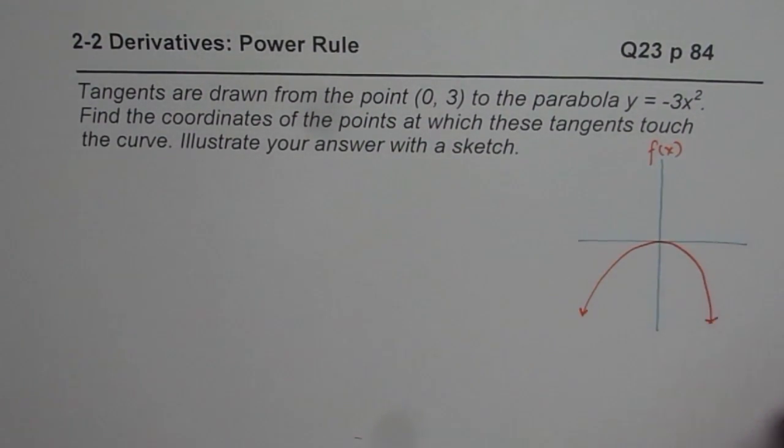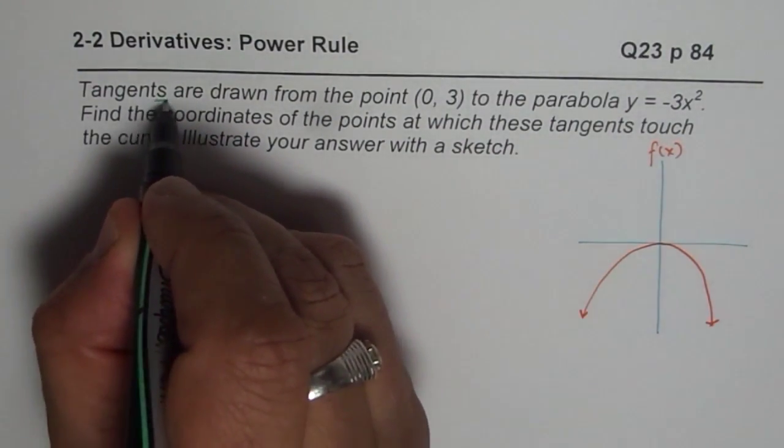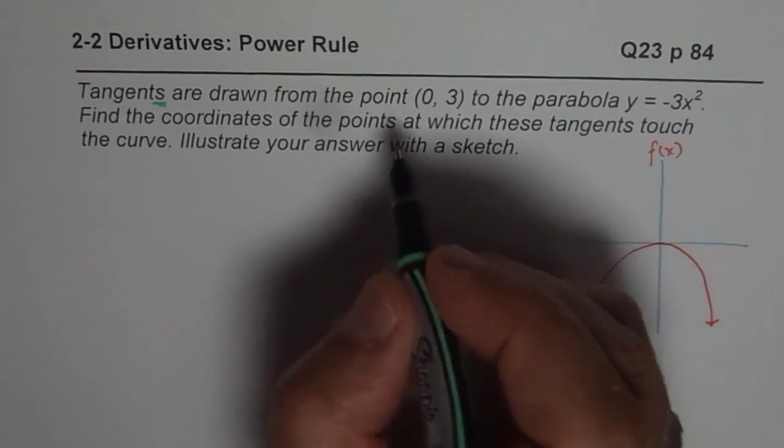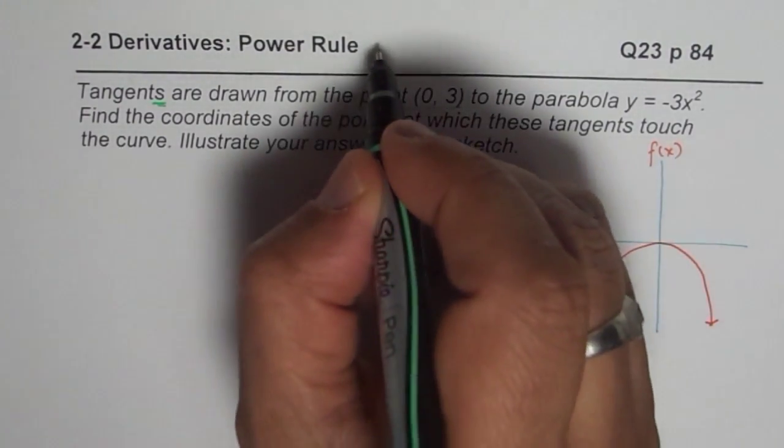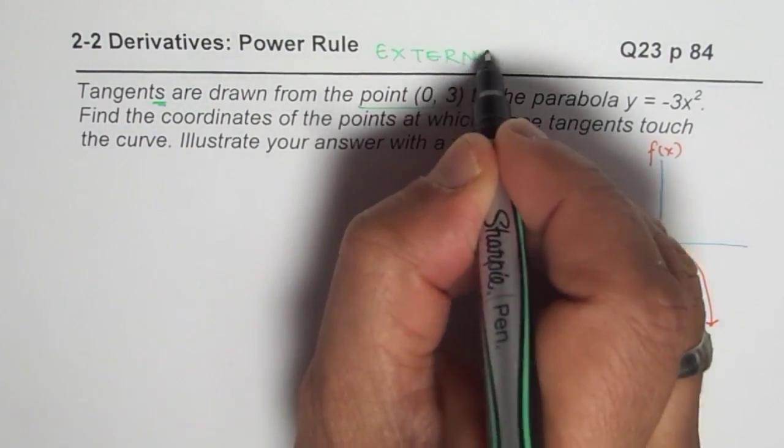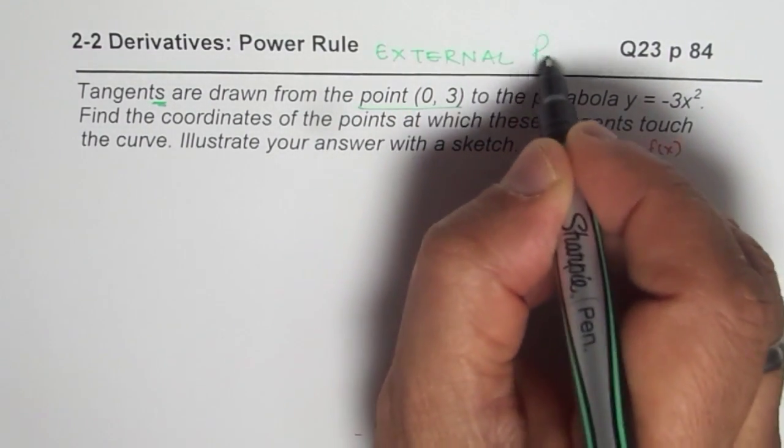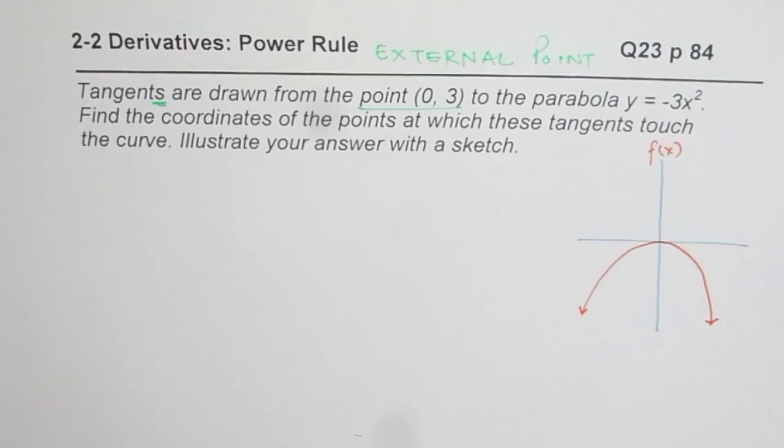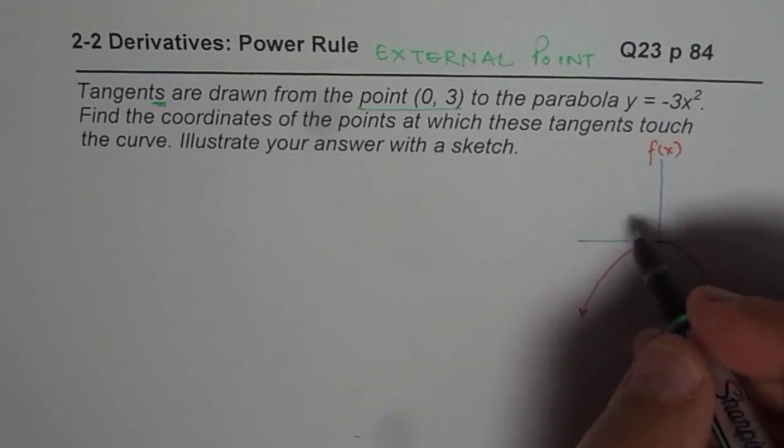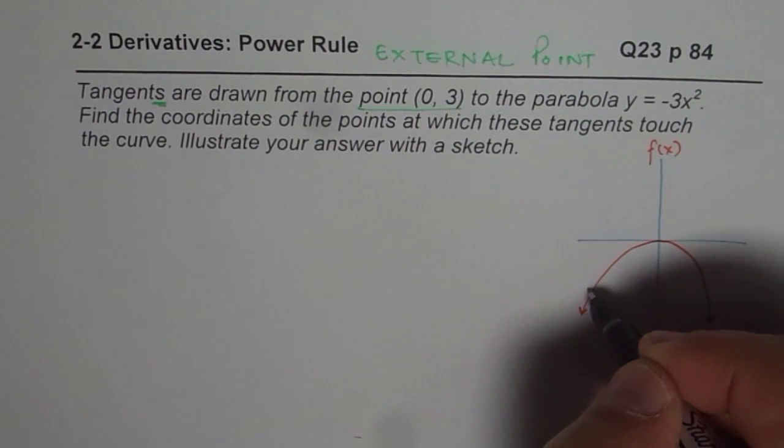From here you can actually draw two tangents. You can see you can draw two tangents, and that is why you'll see tangents here. So in any question on derivatives, if you find tangents, that means you should look for an external point. So we have external point.